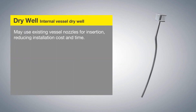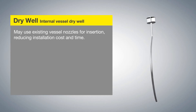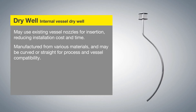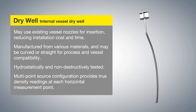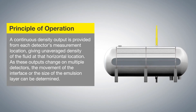The internal vessel dry well may use existing vessel nozzles for insertion, reducing installation cost and time. Manufactured from various materials, it may be curved or straight for process and vessel compatibility. Hydrostatically and non-destructively tested, the multipoint source configuration provides true density readings at each horizontal measurement point.